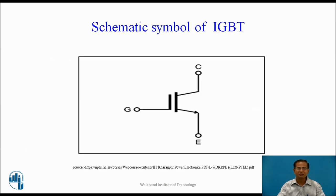This is the schematic symbol of the IGBT. It has three terminals: emitter, gate, and collector. The input characteristics are similar to MOSFET and the output characteristics are similar to BJT.